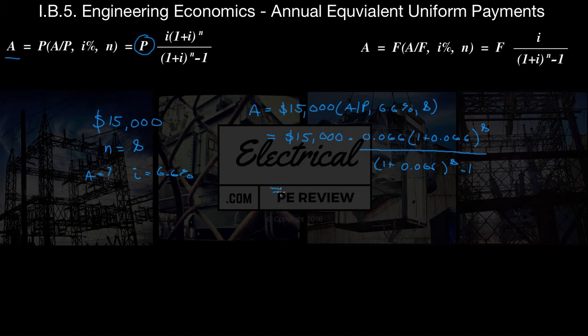So we carry that out and we get just about 15,000 times a decimal value of 0.16488. We keep going and we arrive with our equivalent annual uniform payment for a period of 8 years. Now let's draw our cash flow diagram to see what that looks like.